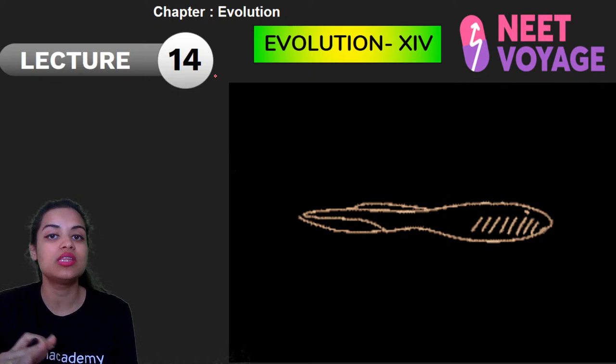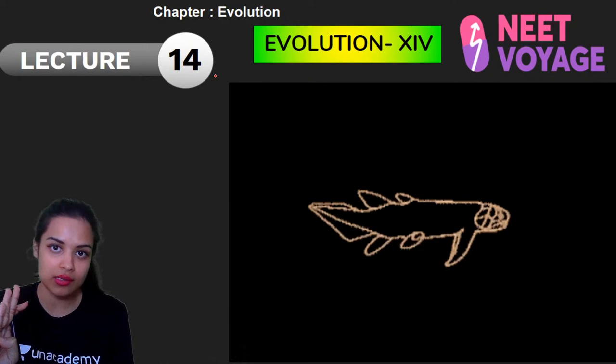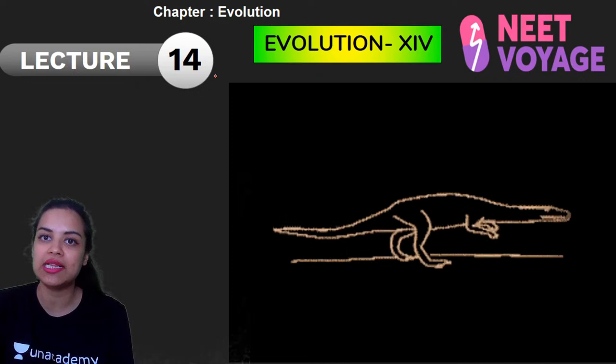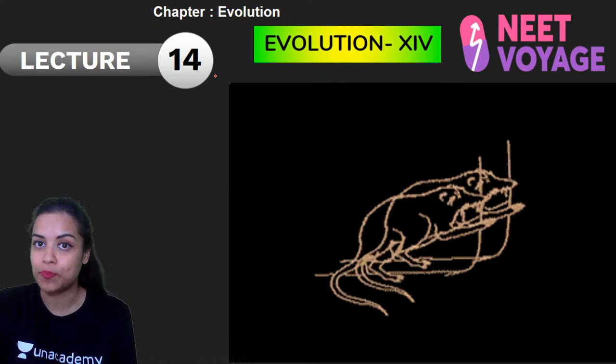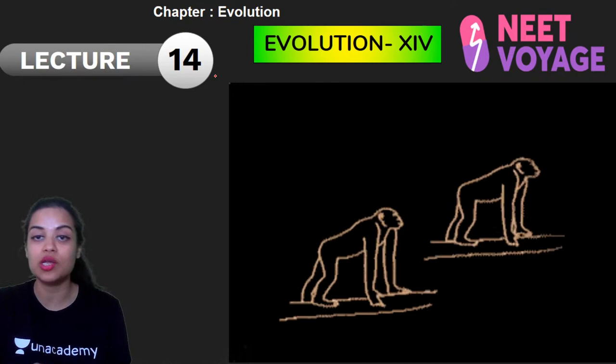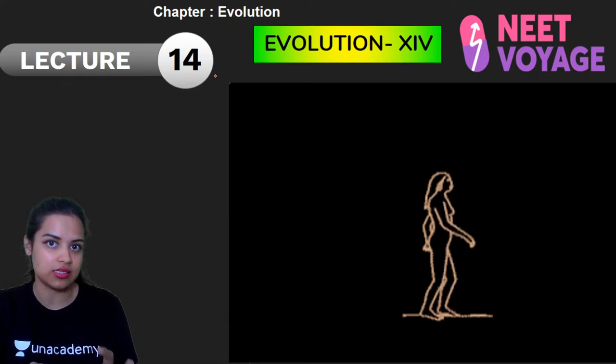Recently we have been talking about the theories of evolution. We have read all the theories — Lamarckism, Darwinism, Hugo De Vries' mutation theory, and modern synthetic theory. Today we need to talk about modern synthetic theory in detail. This modern synthetic theory is also called Neo-Darwinism.